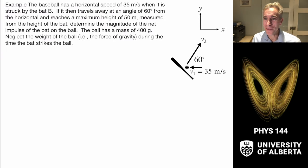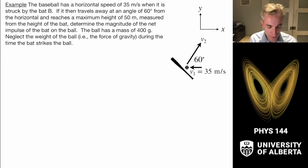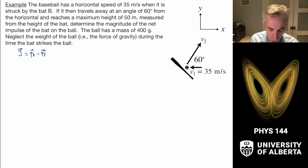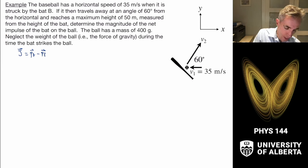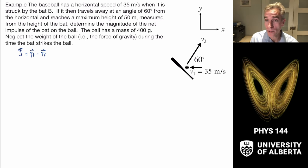Let's return to baseball and consider a two-dimensional problem. A baseball thrown horizontally hits a bat and ricochets upward at 60 degrees above horizontal, reaching a maximum height of 50 meters from the height of the bat. We want the magnitude of the net impulse of the bat on the ball. The net impulse is just the final momentum minus the initial momentum. We neglect the weight of the ball during the bat strike — this is the impulse approximation, since gravity (~4 N) is much smaller than the bat force.